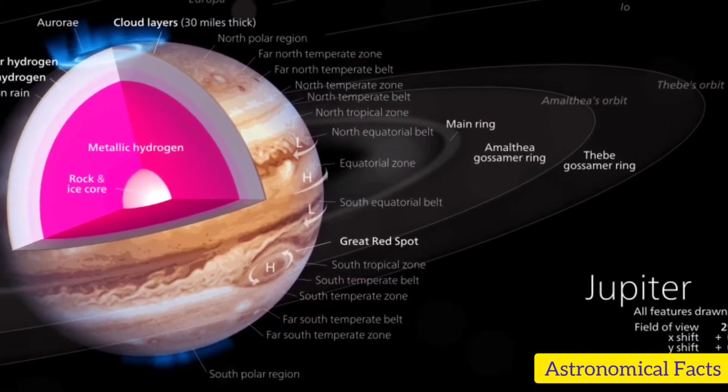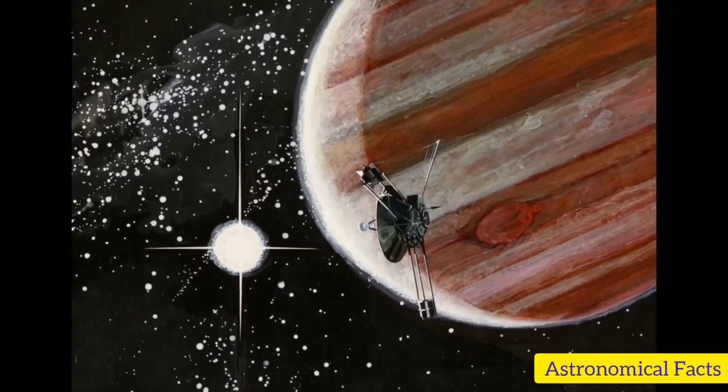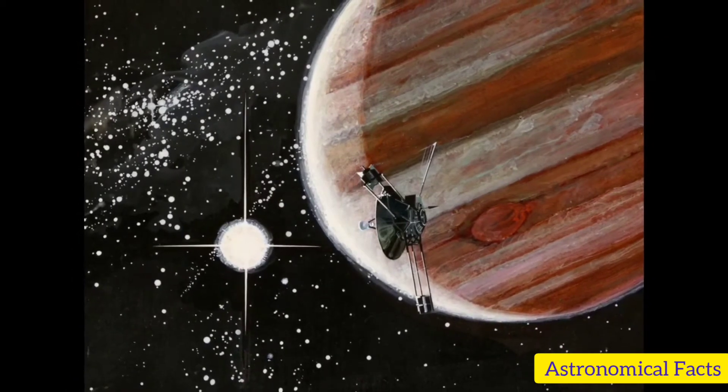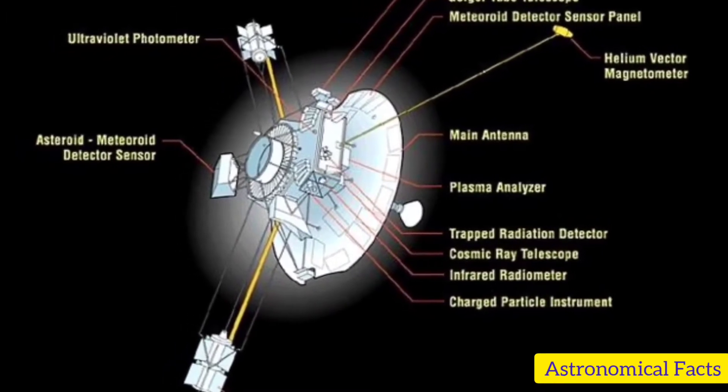During the passage by Jupiter, Pioneer 10 obtained the first close-up images of the planet, charted Jupiter's intense radiation belts, located the planet's magnetic field, and discovered that Jupiter is predominantly a liquid planet.